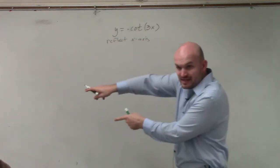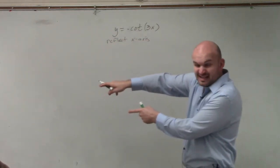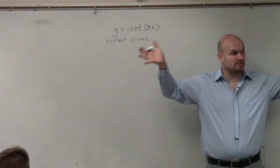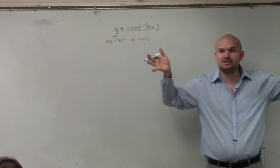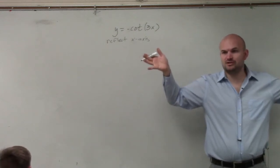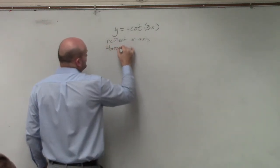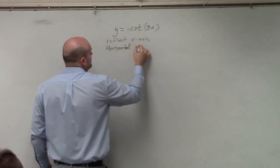I also wrote down some notes right down over there, and I just erased them. But if you remember, if you're multiplying by a number larger than one inside the function, that is a horizontal stretch or compression. Exactly, it's a compression. So you could say it's a horizontal compression.